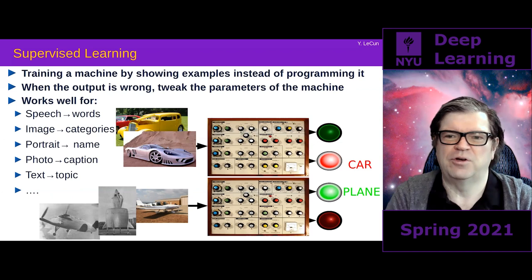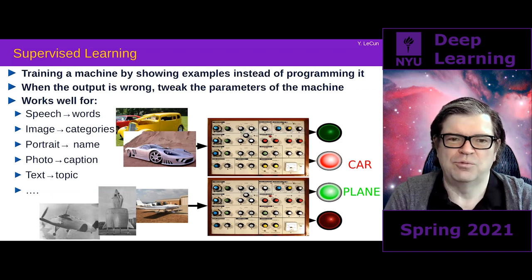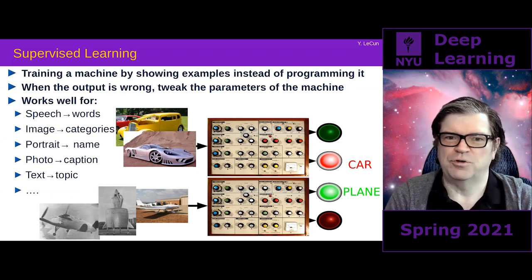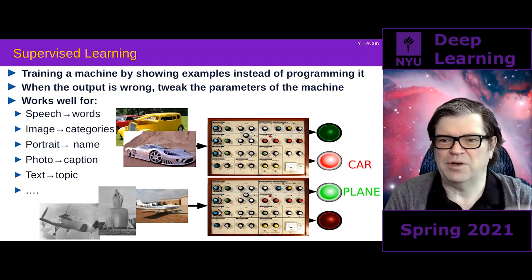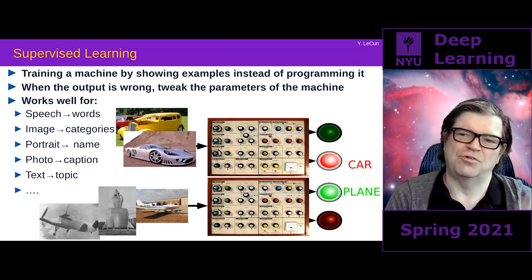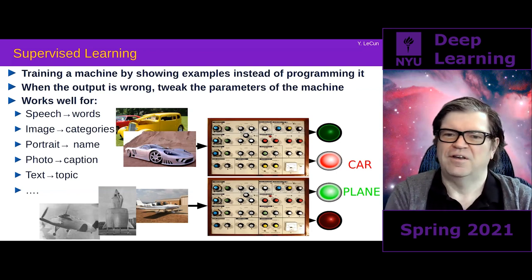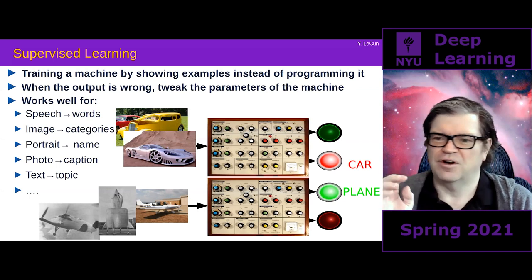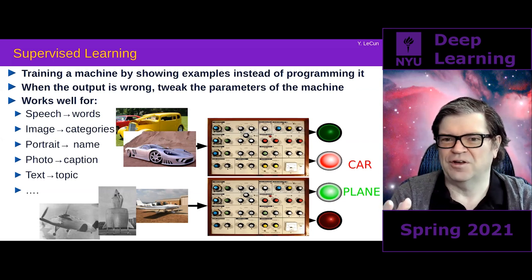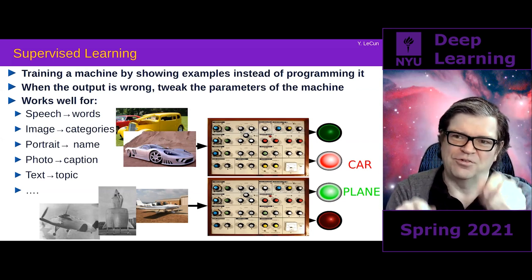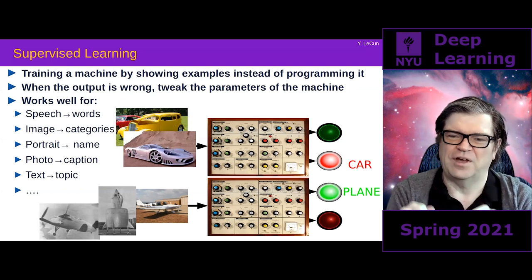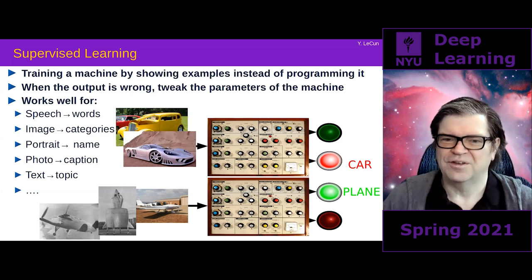This is the paradigm by which you train a machine by showing it examples of inputs and outputs. You want to build a machine to distinguish images of cars from airplanes. You show it an image of a car. If the machine says car, you don't do anything. If it says something else, you adjust the internal parameters of the system so that the output gets closer to the one you want.